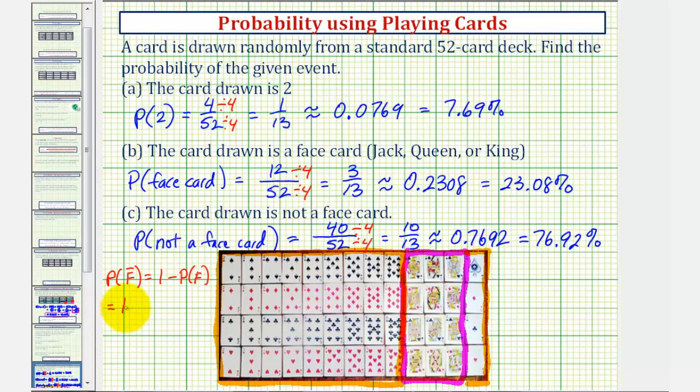Notice how we would have one minus the probability of a face card, which we found in part B as 3/13.